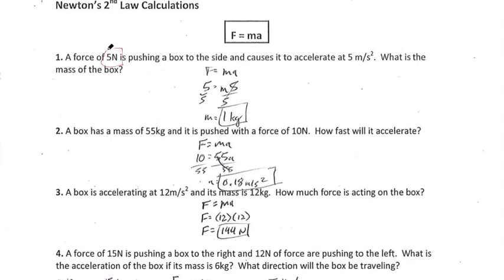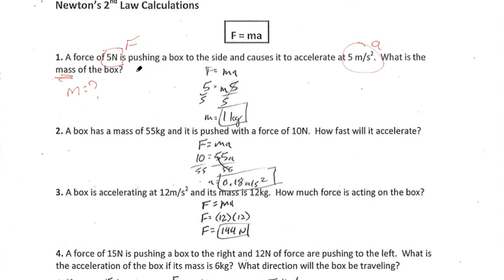Well, we know the force. We know the acceleration. We're looking for mass. The equation that relates force, mass, and acceleration is F equals ma. So start by writing our formula. We know that our force is equal to 5 newtons from the problem. We know that our acceleration is equal to 5 meters per second squared from the problem.